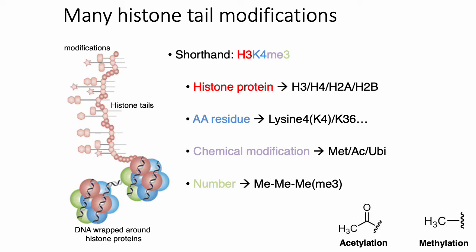With acetylation, you can only have one acetyl group, so there's no number if the modification involves an acetylation. In the case of trimethylation, you have three methyl groups being added to the amino acid.